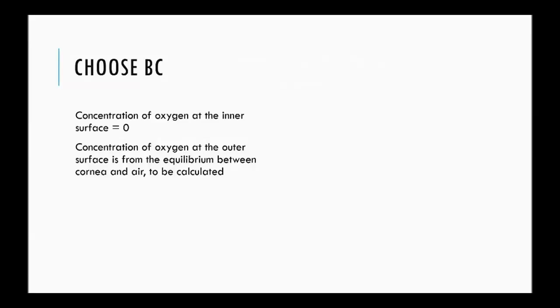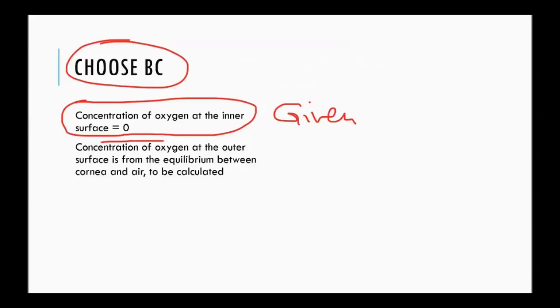Next is choosing the boundary condition. Now, concentration of oxygen at the inner surface is 0. This is given. Concentration of oxygen at the outer surface is from equilibrium between cornea and air. So this has to be calculated. So we need a number for these that we will get to in a minute.